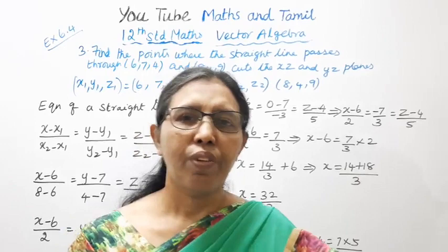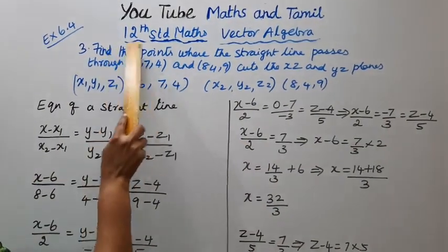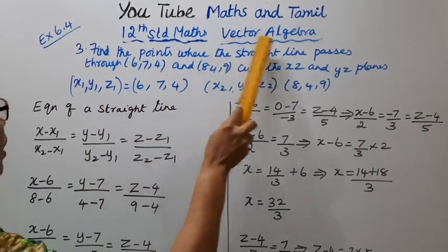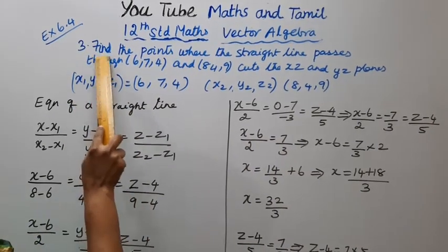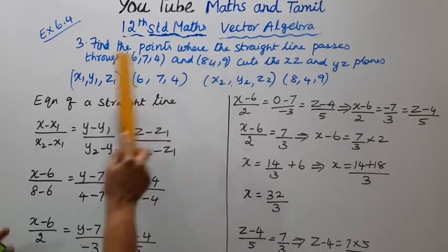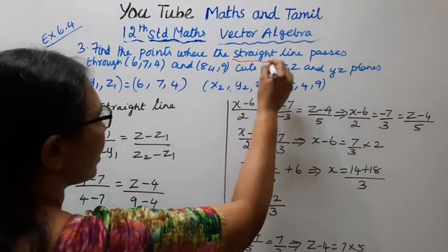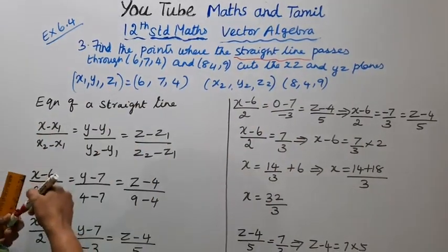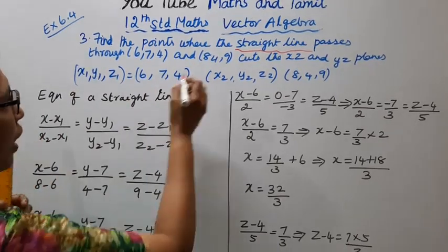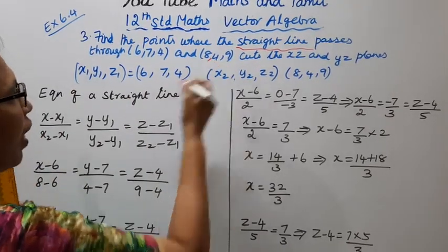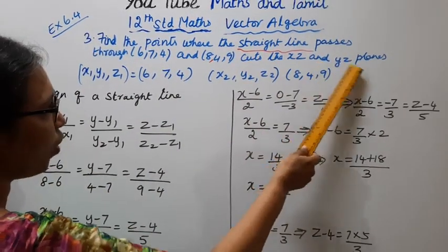Hello students, welcome to Max and Commit channel. Class 12 standard, Max Vector Algebra, Exercise 6.4, third sum. Find the points where the straight line passes through (6,7,4) and (8,4,9) — where it cuts the XZ and YZ planes.